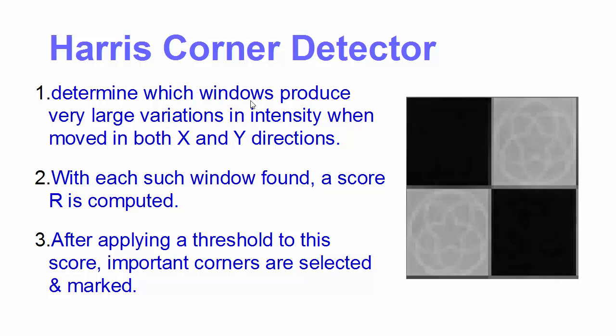Now what are windows here? Windows in this case means, let's say we want to find this corner here. Windows will be your small box here, and then you check for the intensity when you move in the vertical direction and also in the horizontal direction. You check for the change or large variation in the intensity when you move in the X direction and when you move in the Y direction.